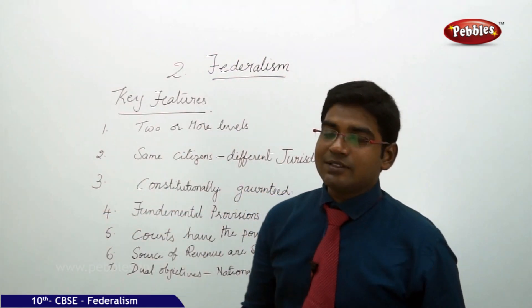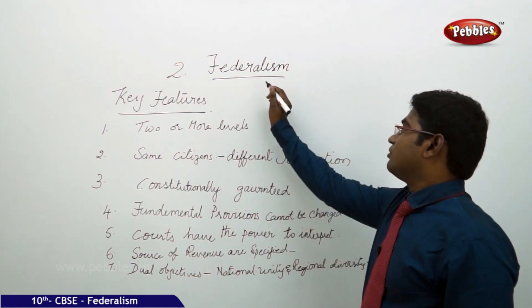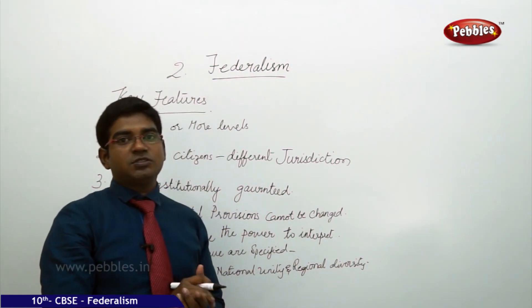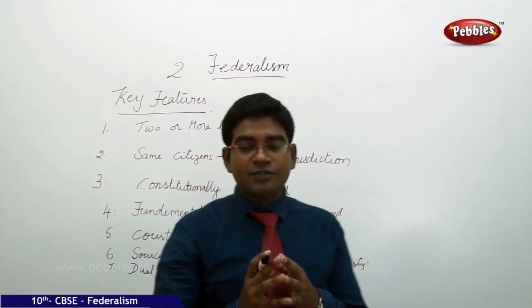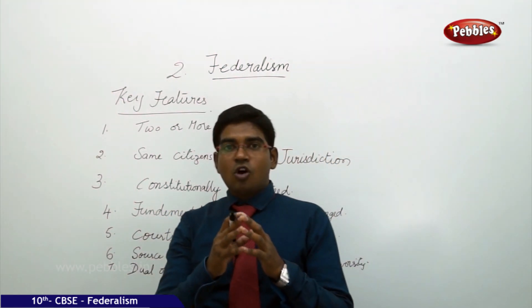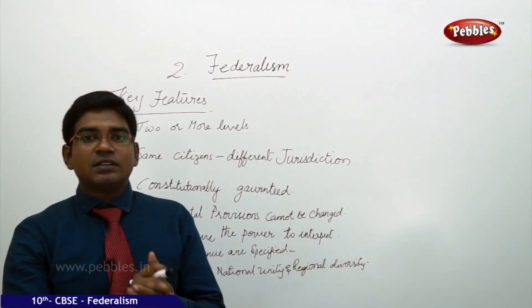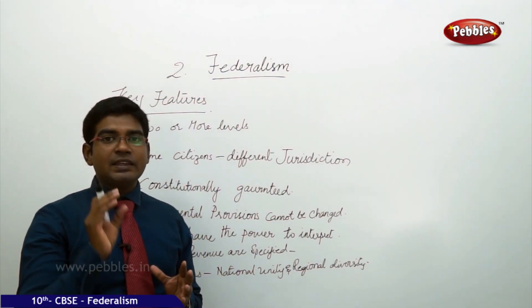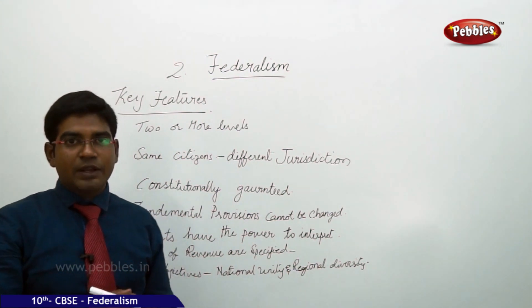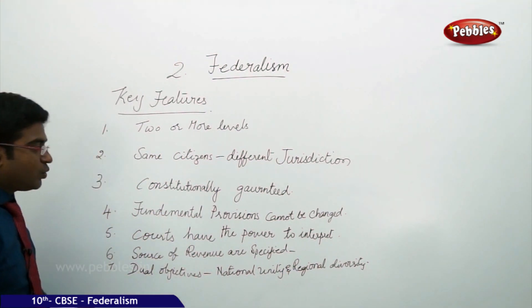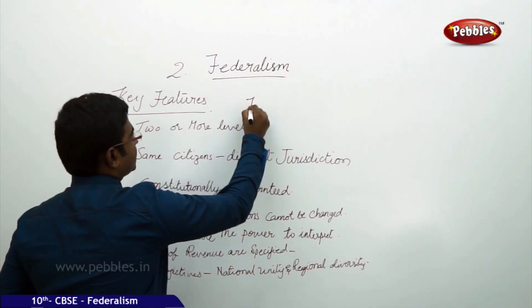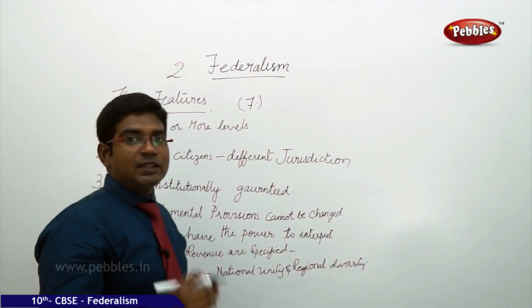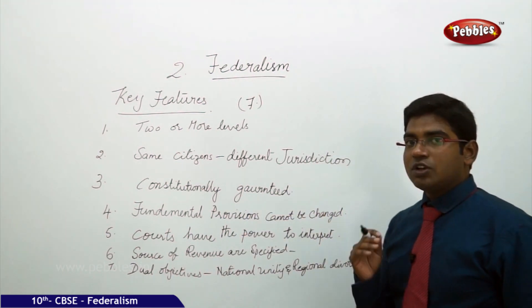Let us try to establish the key factors of federalism. Key factors means the basic features. Just as the Constitution has certain basic structure or basic features, in the same way, in order to claim or analyze that a country's government setup has a federal structure, we need to look at the issues basically required. There are seven features which are basic requirements to claim that there is a federal structure in a particular nation or state.